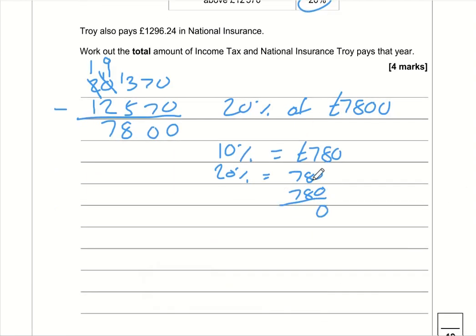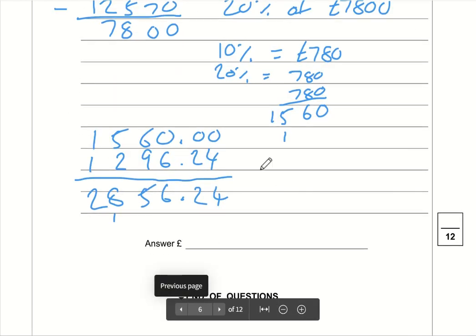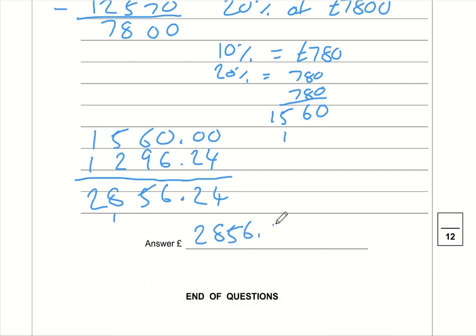So he pays £1,560 tax and also pays £1,296.24 in National Insurance. If we're adding them together, put a decimal point and two zeros on the £1,560, and line up the decimal point. 4 plus 0 is 4, 2 plus 0 is 2, 6 plus 0 is 6, 6 plus 9 is 15 carry 1, 5 plus 1 is 6, then 1 plus 1 is 2. The final answer is £2,856.24.